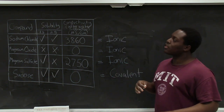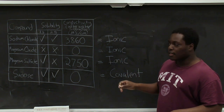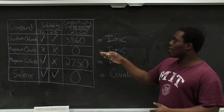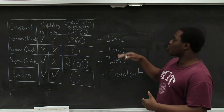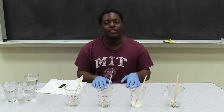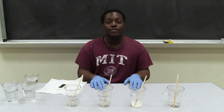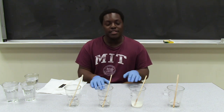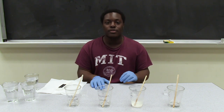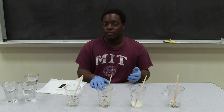By using our knowledge of bonding and our solubility and conductivity data, we're able to affirm the identity of our compounds — that is, whether or not they're ionic or covalent. Today we looked at how the type and strength of bonding of a solid influences its properties, specifically how these aspects of bonding influence the solubility and conductivity of these solids in water.